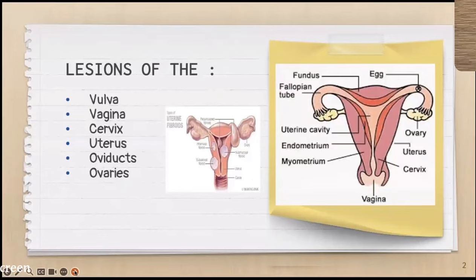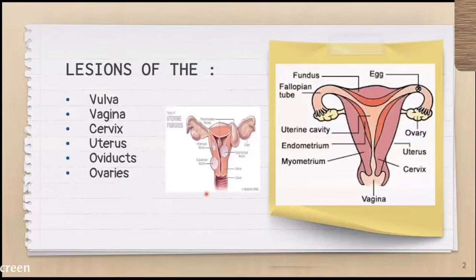When we talk of benign lesions of the reproductive tract, it means the lesions of the vulva, the vagina, the cervix, and the ovidax. So everything from the vulva outside, to the vagina, to the cervix, and then the uterus, and then the ovidax — which refers to the fallopian tube — and finally the ovaries.